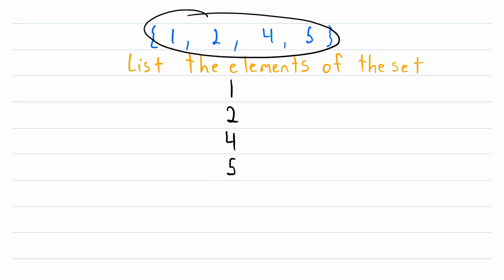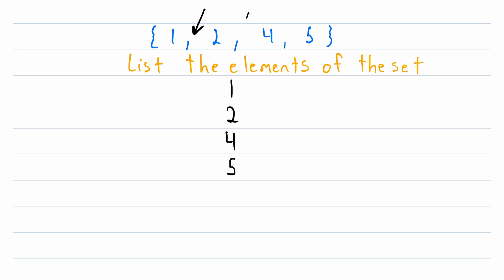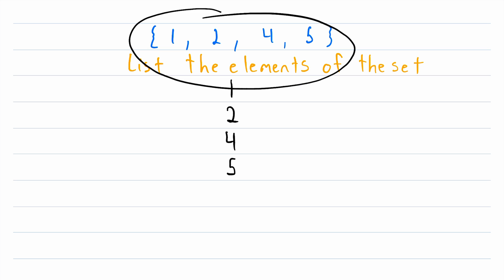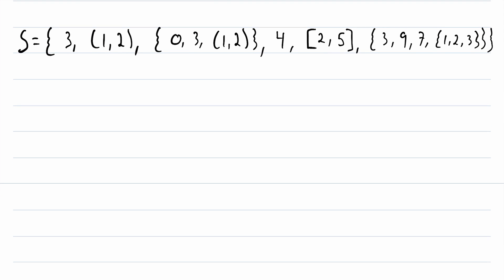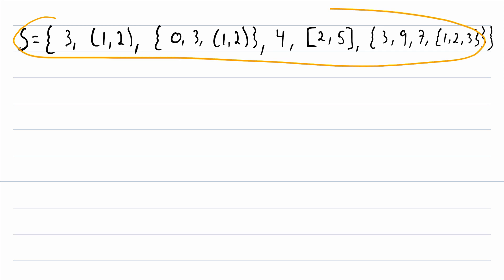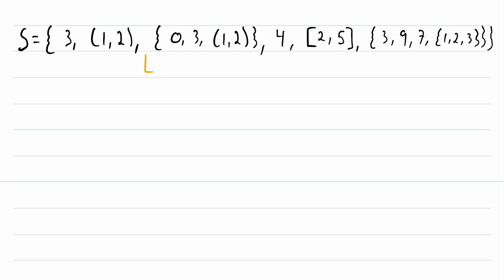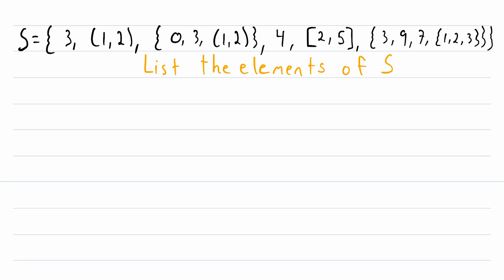Again, when a set is written out in roster form, the elements are separated by commas. But it's not always this simple, so let's slide on down to a much nastier example. Here is a set called S, and just as before, let's say that we are asked to list the elements of this set. The first thing we need to do is identify the elements of set S.